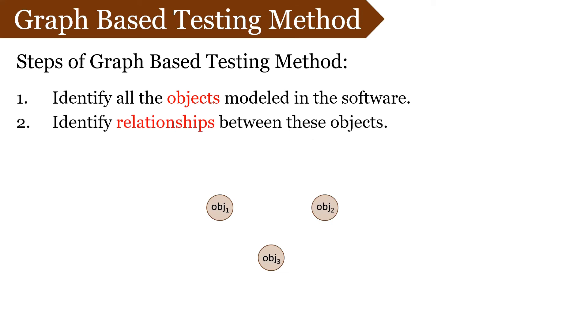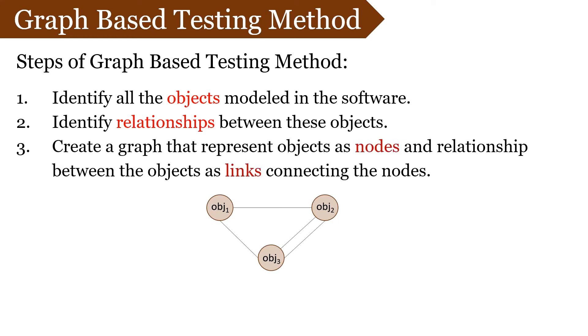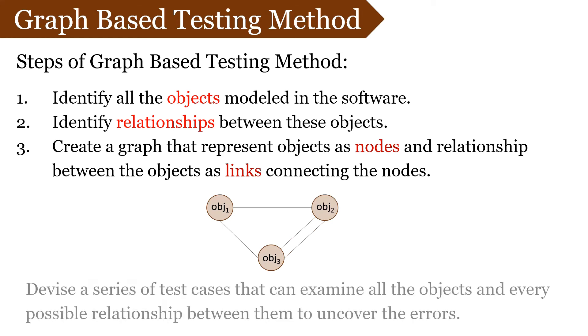The graph-based method is one where all the objects that has to be modeled are identified first. The relationship between those objects are identified. As it is a graph-based model, a graph is created that has nodes representing the objects, and links between these nodes represent the relationship between the objects. Now, the tester figures out series of test cases that can fully examine all the objects and every possible relationship between them to uncover the errors.